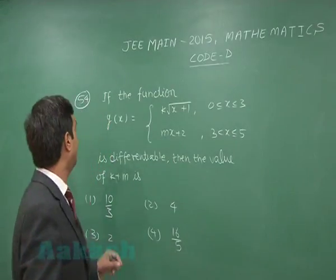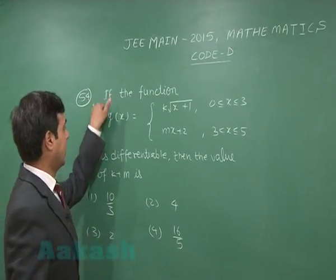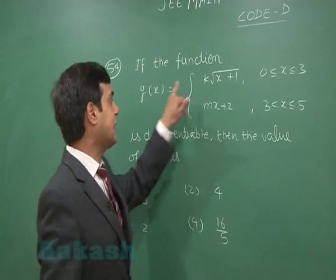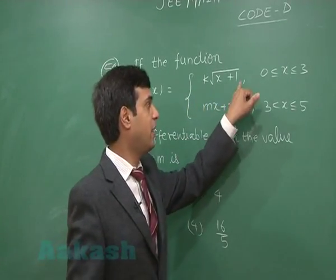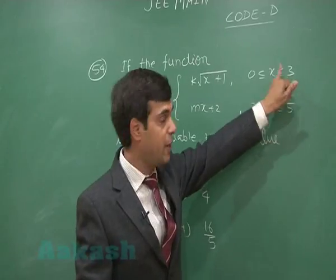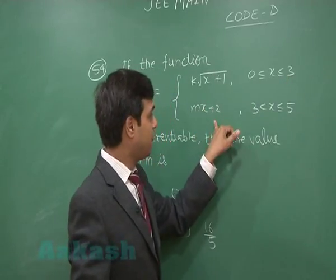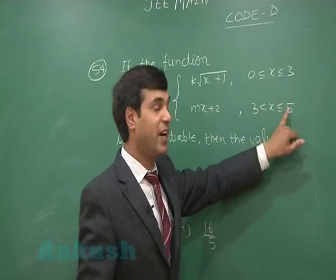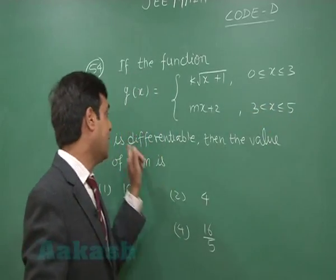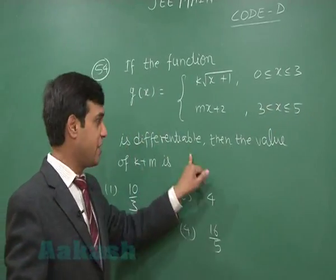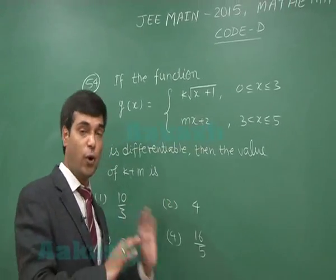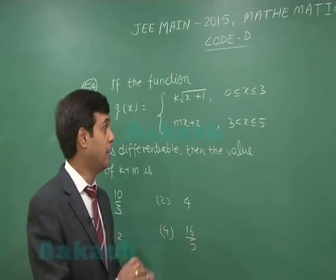Question 54: If the function g(x) equals k times root(x+1) when x is between 0 and 3 (including endpoints), and mx+2 when x is between 3 and 5 (including 5, excluding 3), is differentiable, then the value of k plus m is — four options are given.